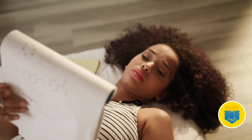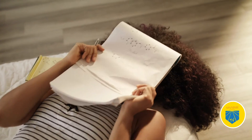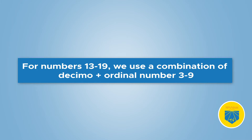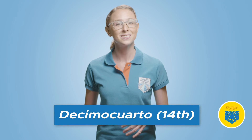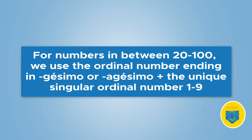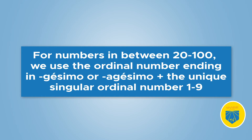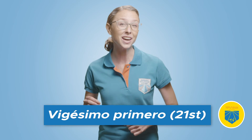While there isn't a rigid formula to memorize all ordinal numbers after 11, there are a few guidelines we can follow. For numbers 13 through 19, we use a combination of décimo and ordinal numbers 3 through 9, as in décimo cuarto. For numbers between 20 and 100, we use the ordinal number ending combined with the unique singular ordinal number 1 through 9, as in vigésimo primero.